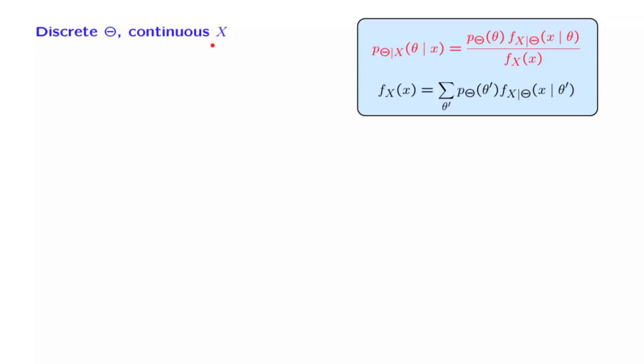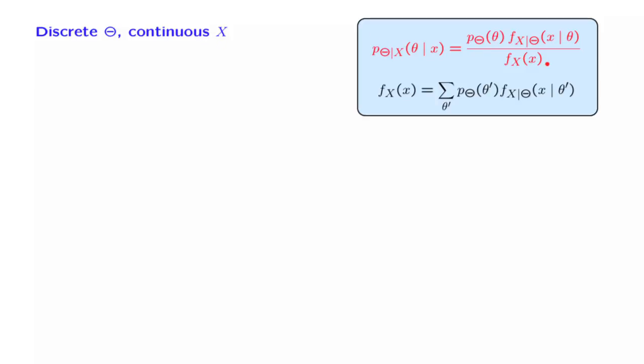Of course, we do have a variation of the Bayes' rule that's applicable to this situation. The only difference from the previous version of the Bayes' rule is that now the PMF of x, the unconditional and the conditional one, is replaced by a PDF. Otherwise, everything remains the same.